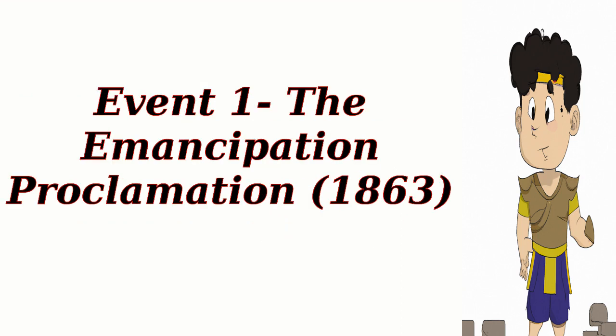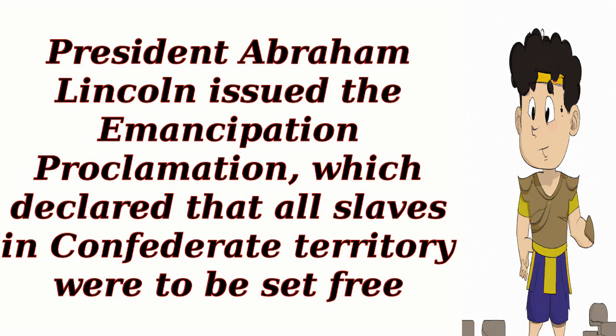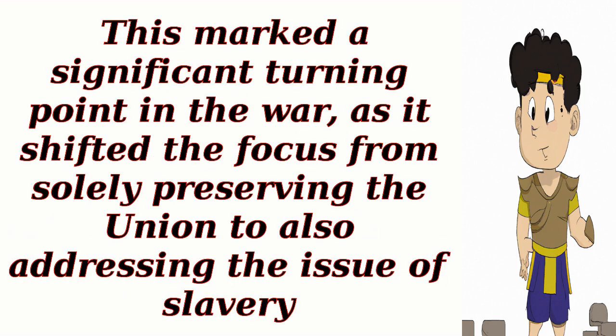Event 1 – The Emancipation Proclamation, 1863. President Abraham Lincoln issued the Emancipation Proclamation, which declared that all slaves in Confederate territory were to be set free. This marked a significant turning point in the war, as it shifted the focus from solely preserving the Union to also addressing the issue of slavery.